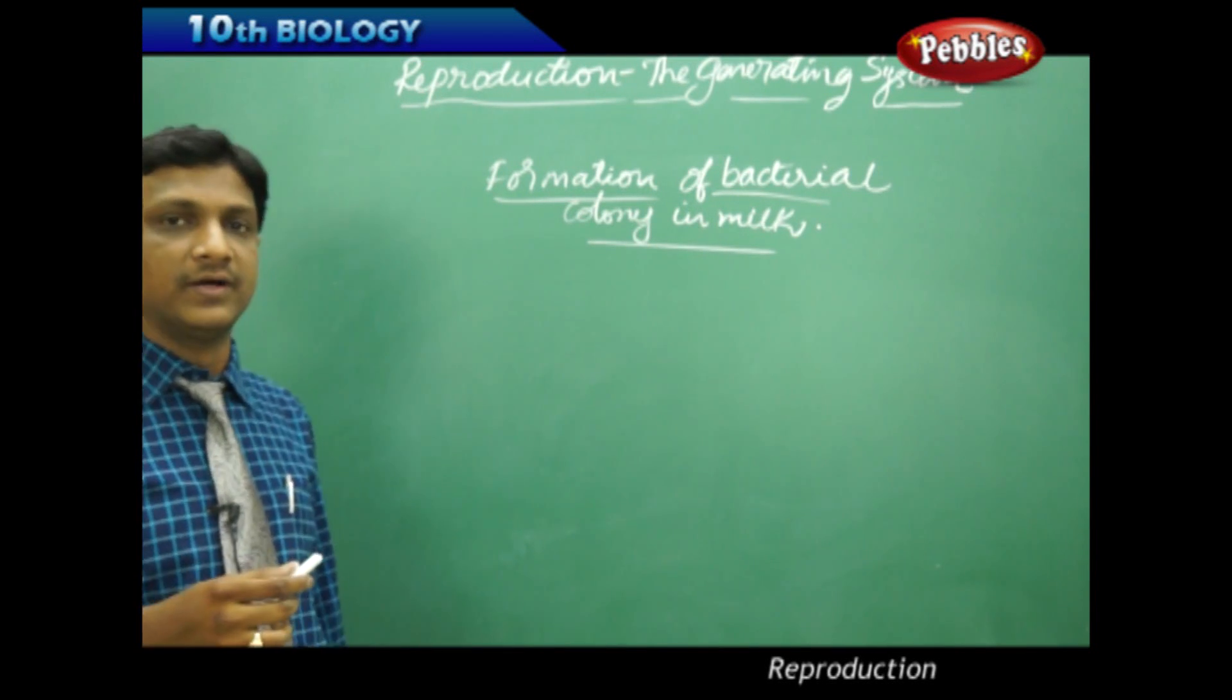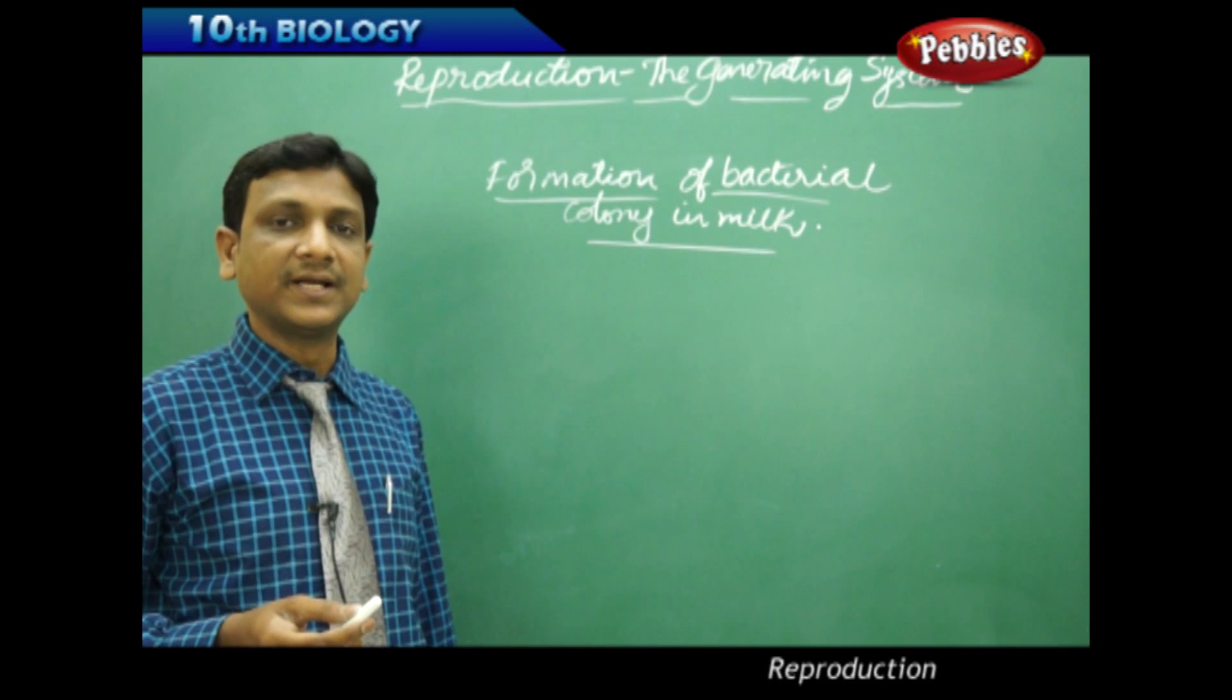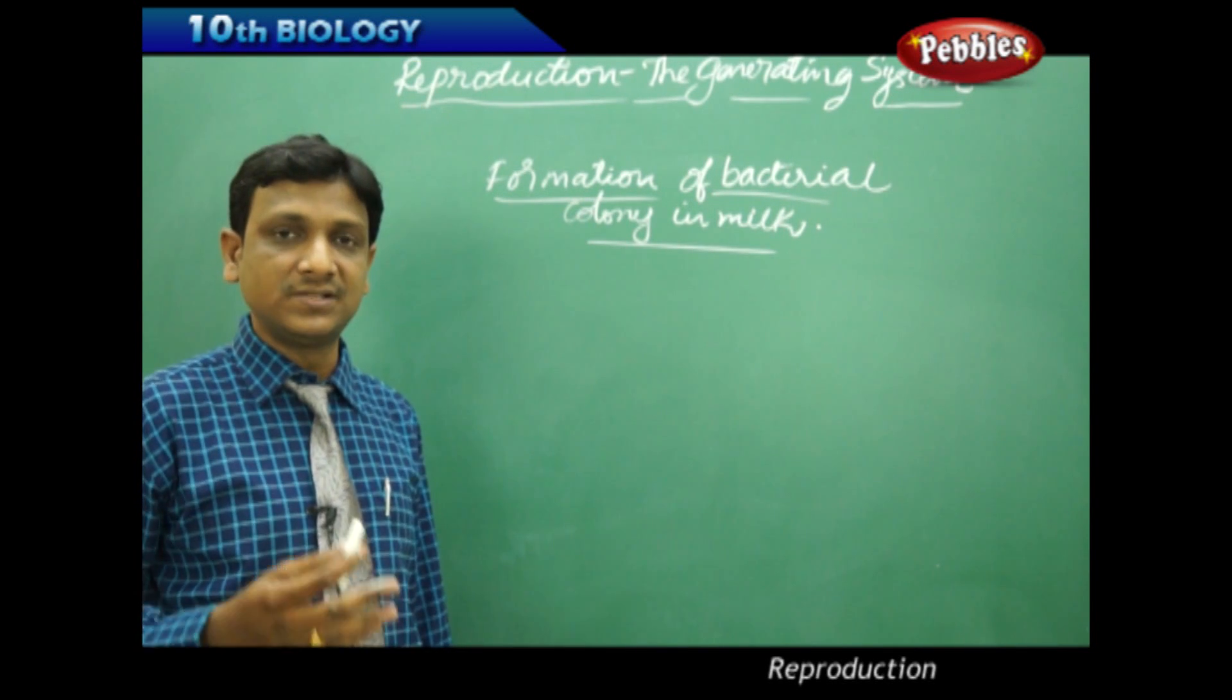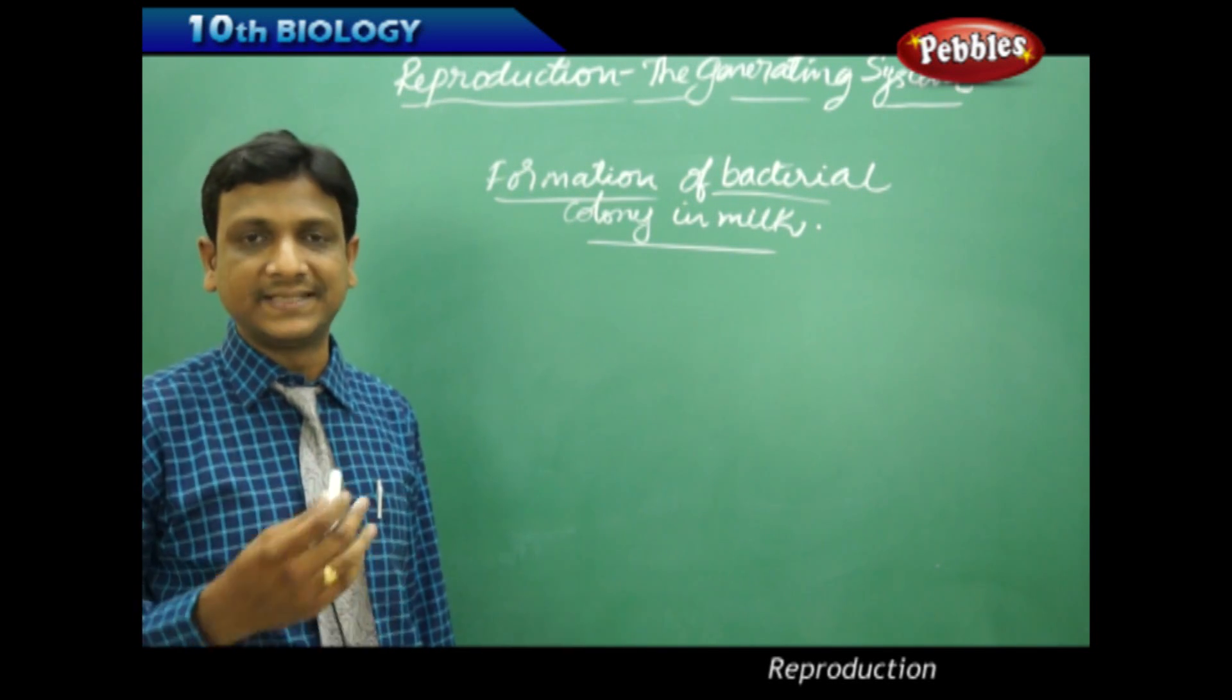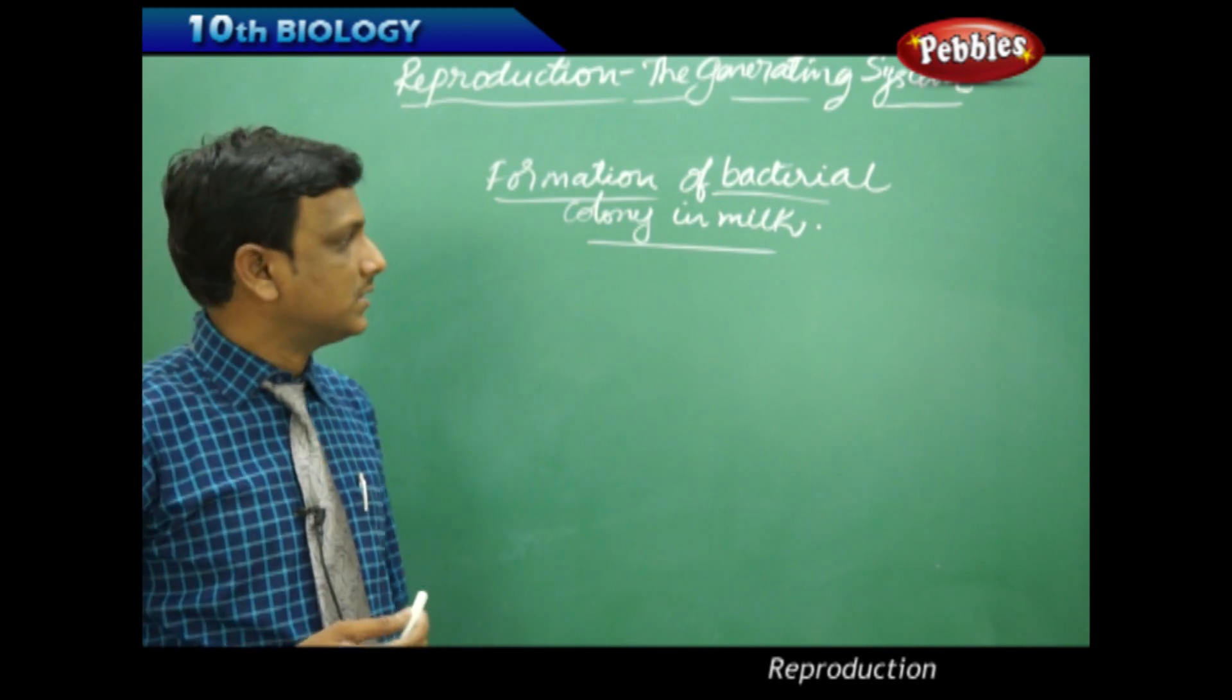Formation of bacterial colony in milk—that is reproduction in bacteria. Bacteria generally reproduces by binary fission, that means bacteria splits into two new bacteria. In that mode of reproduction, it develops and grows in number.